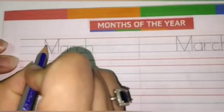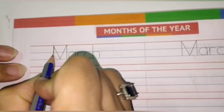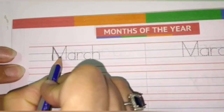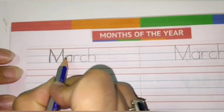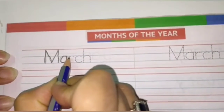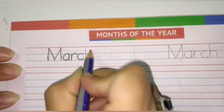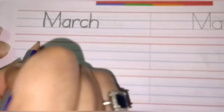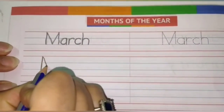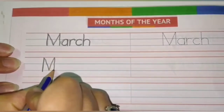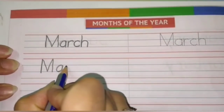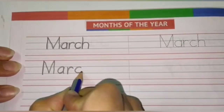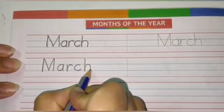Now children, you will open to page number 124 and we will begin with March. March, capital M, A, R, C, H. March. See it once more children, capital M, A, R, C, H. March.